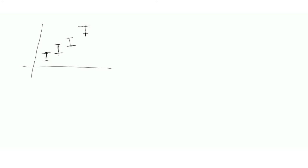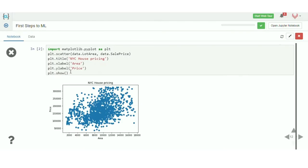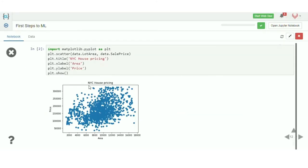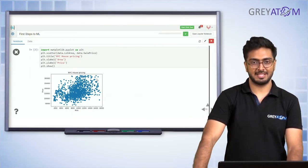Looking at the scatter plot, what we can see is that there's a range in which prices are fluctuating. That range is moving upward as the area increases. When area is low, the price range is not extremely high, and that range is higher when the area of the house is high. It's not an absolute straight line, but there's clearly some kind of relationship — not a very strong one, but definitely some relationship.